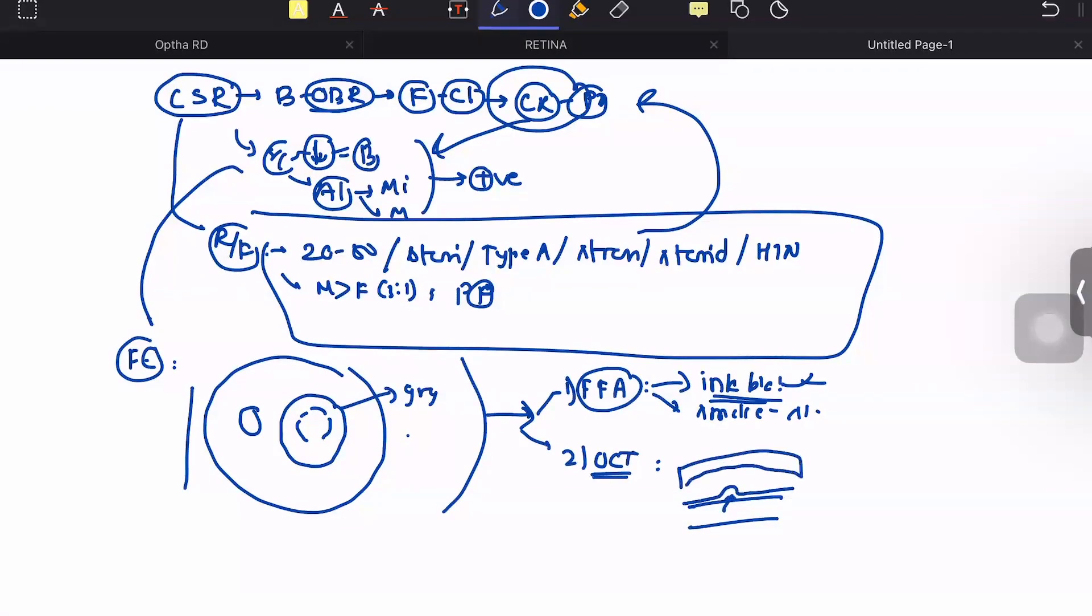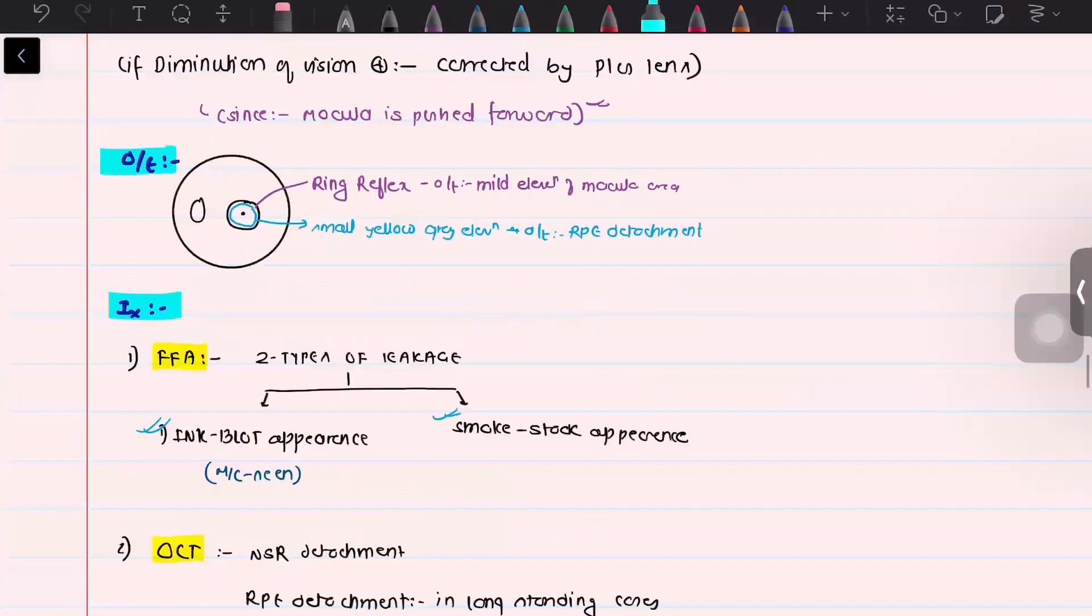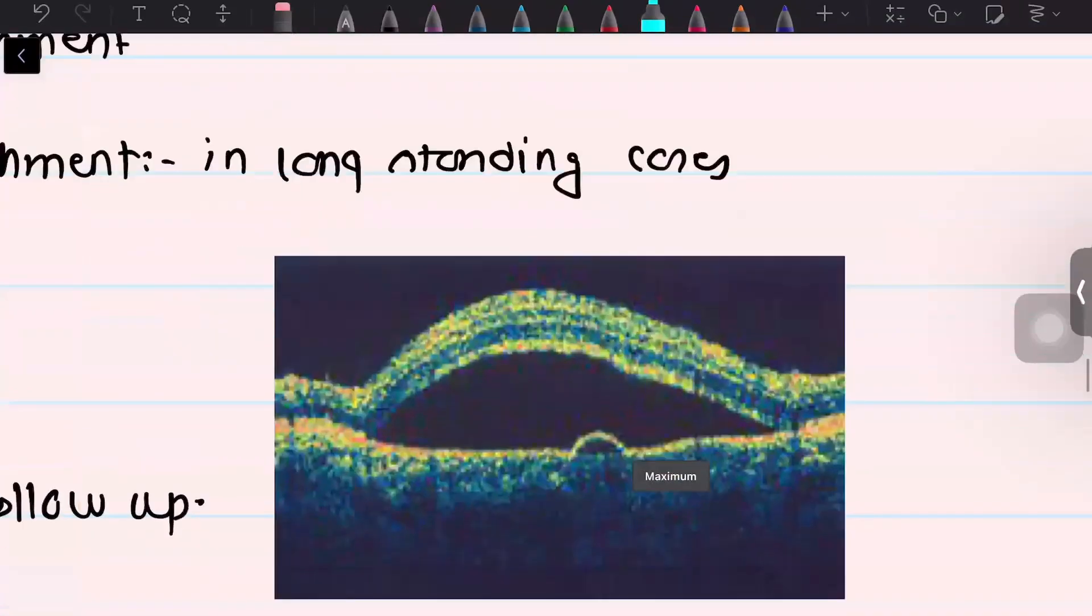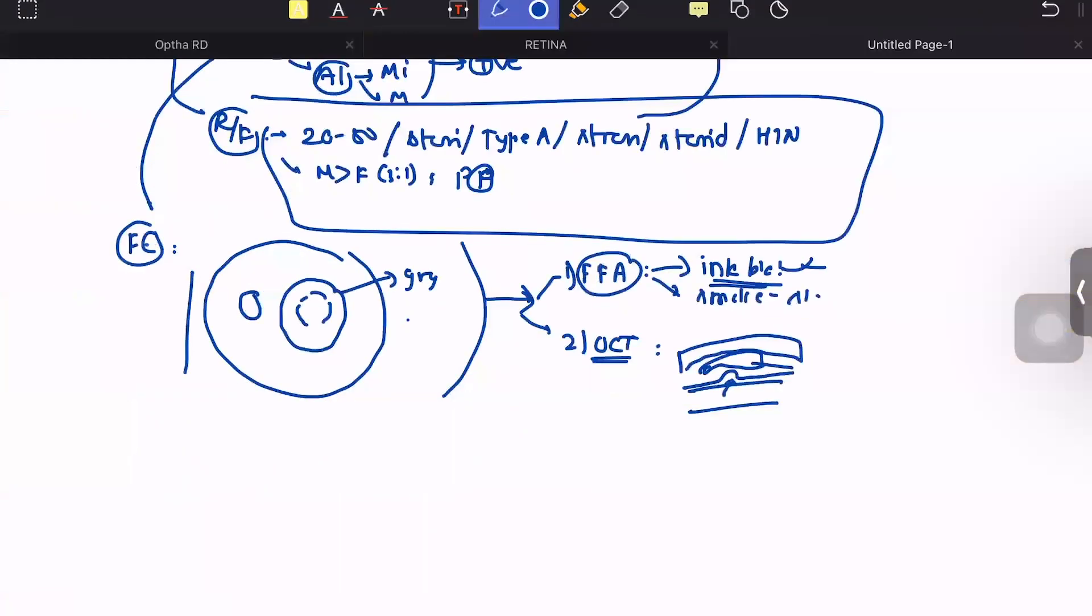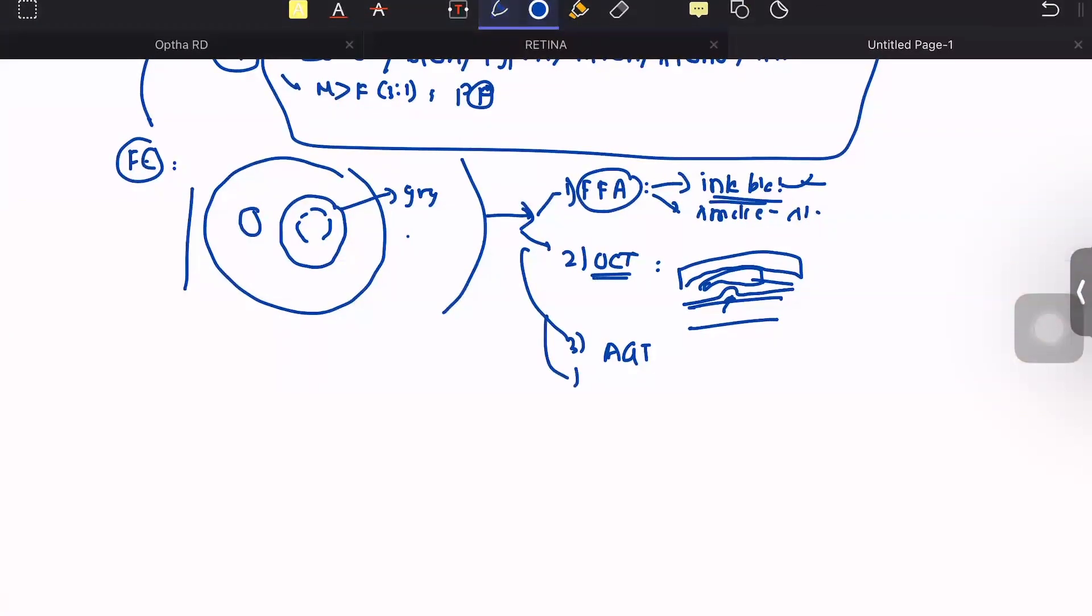We can see the neurosensory retina is detached focally on OCT. Another investigation is Amsler grid test, which is used for follow-up to monitor visual prognosis and improvement. Indocyanin green angiography is also performed to visualize the choroidal vasculature.